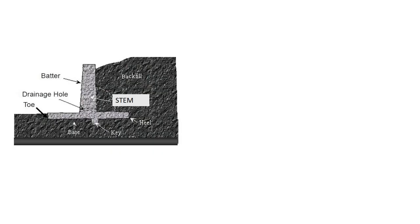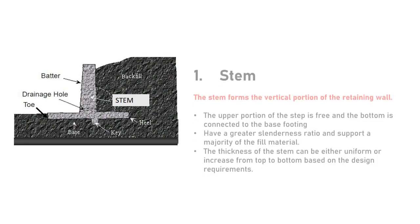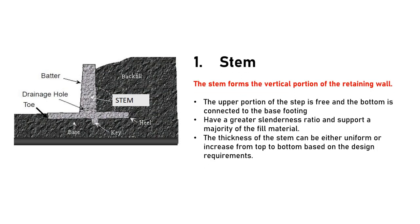Let's familiarize ourselves with the basic components of a retaining wall. Number 1 is the stem. The stem forms the vertical portion of the retaining wall. The upper portion of the stem is free and the bottom is connected to the base footing — that is, the toe and the heel slab, as shown in the figure. The stem has a greater slenderness ratio and supports the majority of the filling material. Its thickness can be uniform or increased from top to bottom based on design requirements.